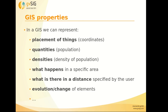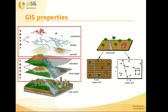We can represent different types of information — for example, quantities, densities, what happens in a specific area, or the change and evolution of elements. We can also perform analyses, such as finding what elements are within a specific distance, or do more advanced analysis.